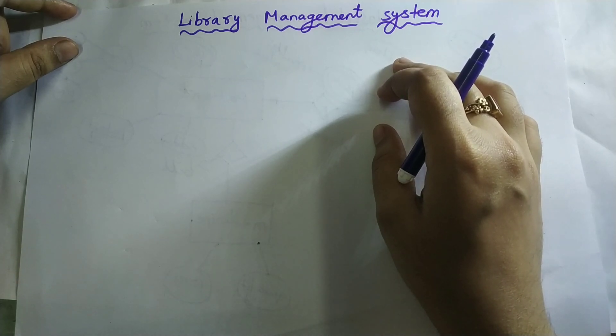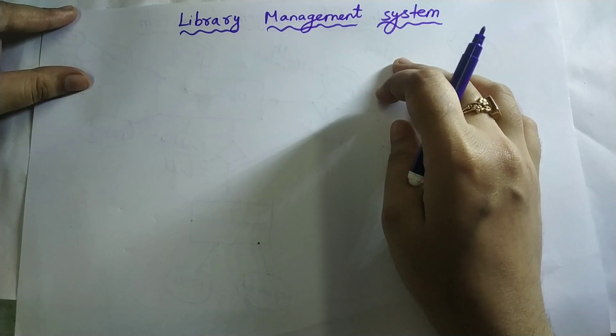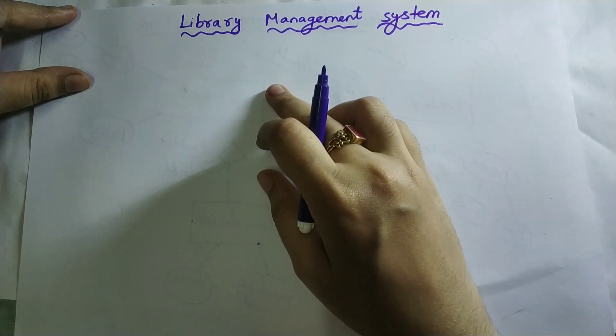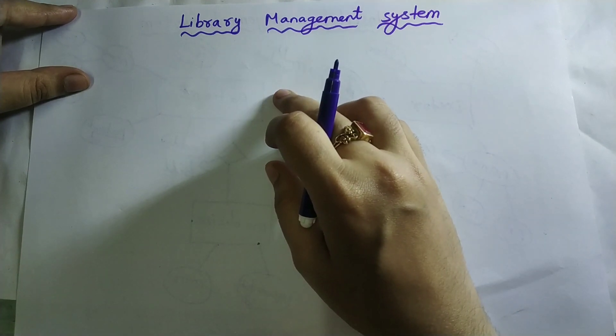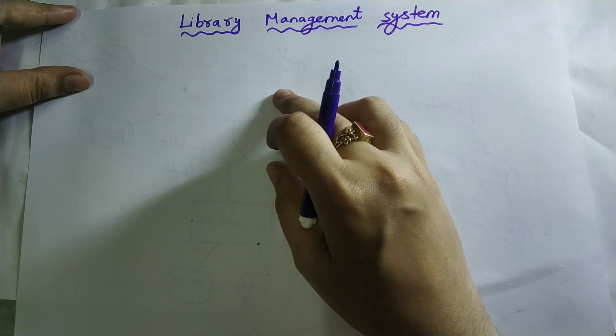An entity must be an object. In a library, books will be there. Book is physically present, we are able to touch it, so it is physically present and it is an object. Therefore, book is an entity.